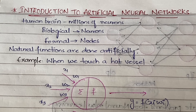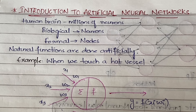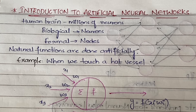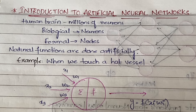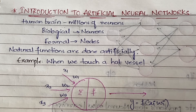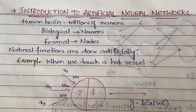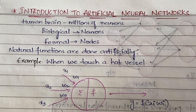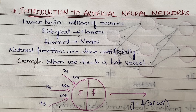Our human brain has so many neurons. If you studied biology in 8th or 10th class, you will have the concept of neuron. Neuron and nephron — nephron is related to the kidney, while a neuron is related to our brain. Inside our brain there are millions and millions of neurons. A neuron is a very small unit; you cannot see a neuron with your naked eye.